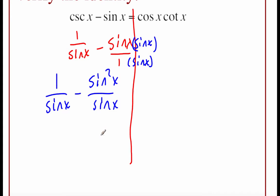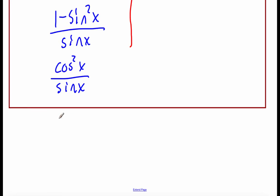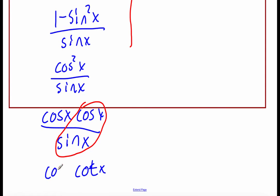Now that we have common denominators, let's put the fractions together: 1 minus sine squared of x over sine of x. On top, using a Pythagorean identity, 1 minus sine squared of x is cosine squared of x over sine of x. Since there's a cosine squared, it's really like having two cosines — cosine times another cosine, all over sine of x. Now I'll group cosine over sine, which is the cotangent of x, with the extra cosine of x out front. That matches our right-hand side — so we're done with this one.